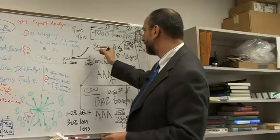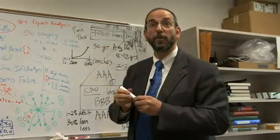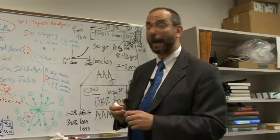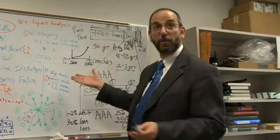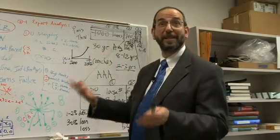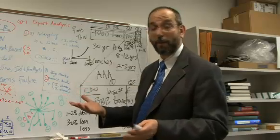Housing prices stopped going up in mid-2006. By mid-2007, the mortgage market had already started to collapse and the subprime losses were already starting to show up because people couldn't sell their house anymore for more than they bought it for.